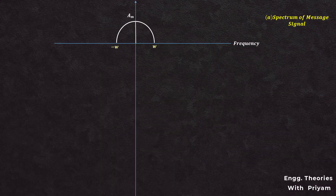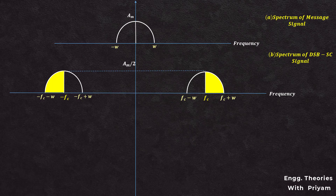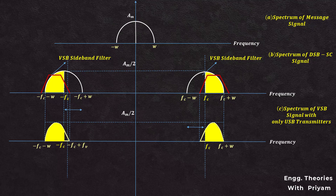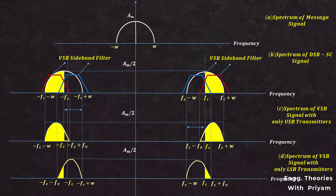The VSB modulated signal is mainly generated from the DSB-SC signal. By passing the DSB-SC signal through the VSB sideband filter having a response like this, we can generate a VSB modulated signal with the upper sideband and the vestige of the lower sideband. And if the VSB sideband filter has a response like this, then we can generate a VSB modulated signal with the lower sideband and the vestige of the upper sideband.